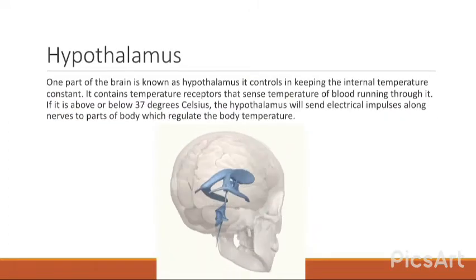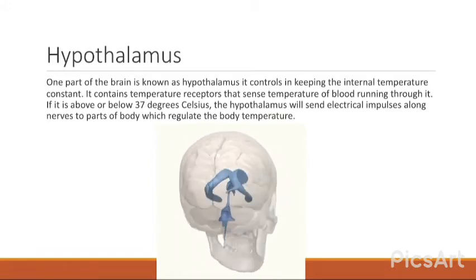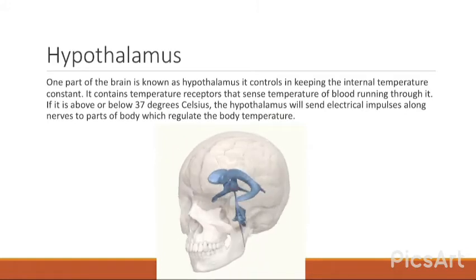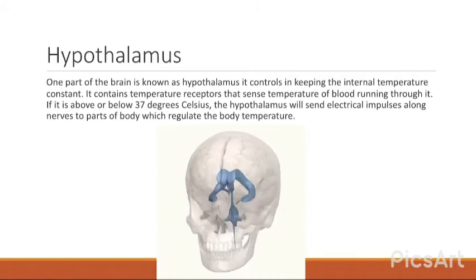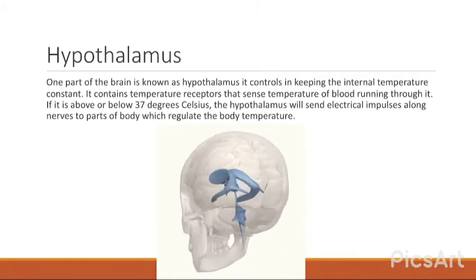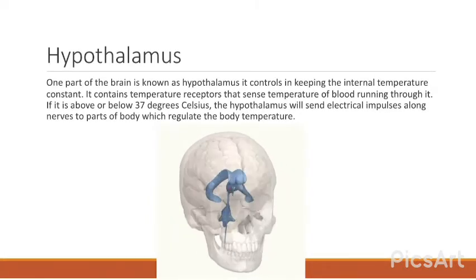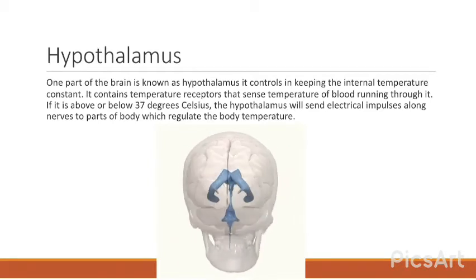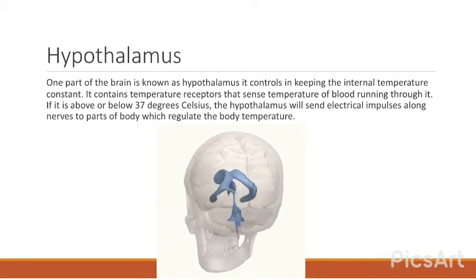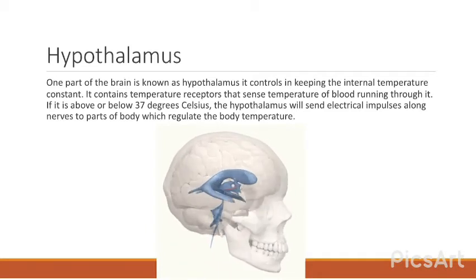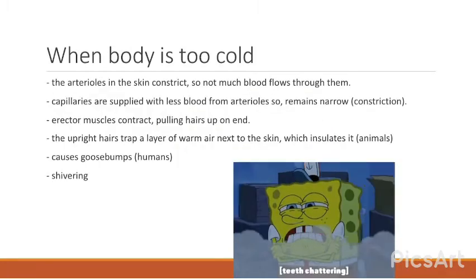The hypothalamus is a part of the brain that controls internal temperature, keeping it constant. It contains temperature receptors that sense the temperature of blood running through it. If temperature is above or below 37°C, the hypothalamus sends electrical impulses along nerves to parts of the body which regulate body temperature.